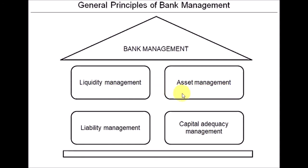Asset management within a bank mostly relates to trying to obtain high interest rates from good borrowers and reducing the risks of loans that banks provide. Asset management also involves trying to find good marketable securities to buy, which are relatively safe but provide good profitable opportunities. Basically, asset management is trying to obtain high returns while reducing risks, including credit risk, interest rate risk, and so on.